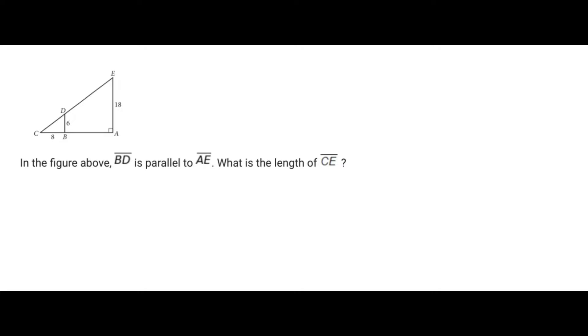First off we have two triangles: triangle EAC and also triangle DBC. So the first thing to notice here is that there is similarity present between these two triangles. Why? Well because of angle-angle.